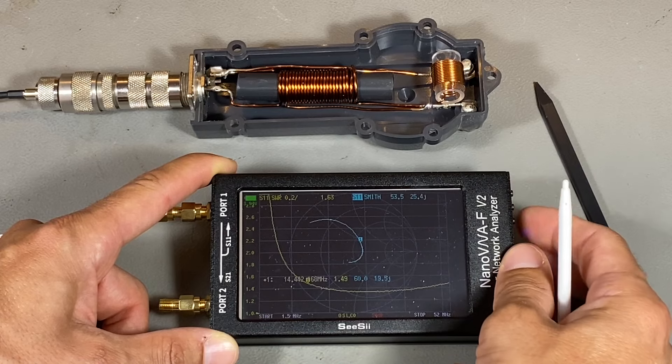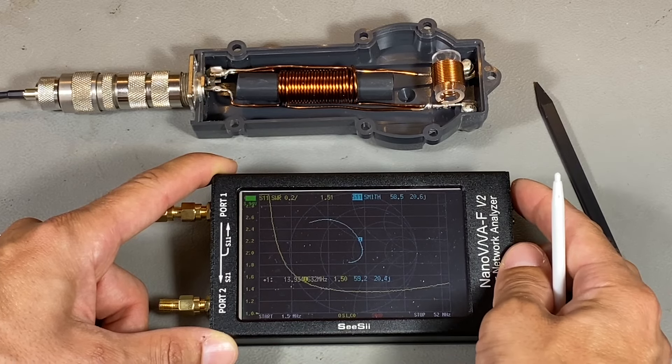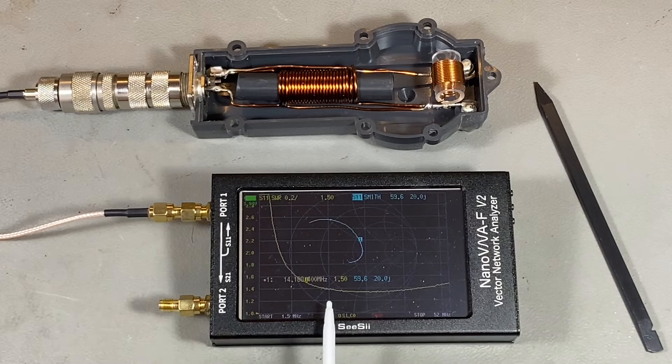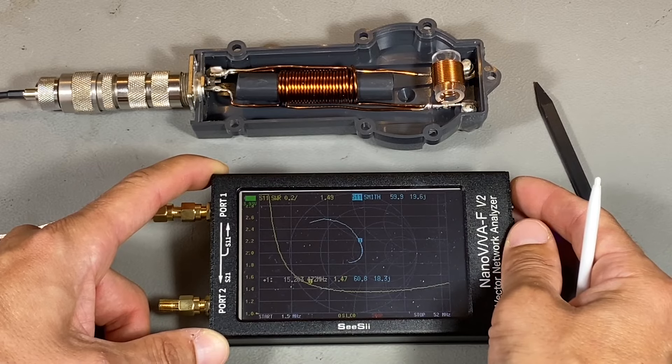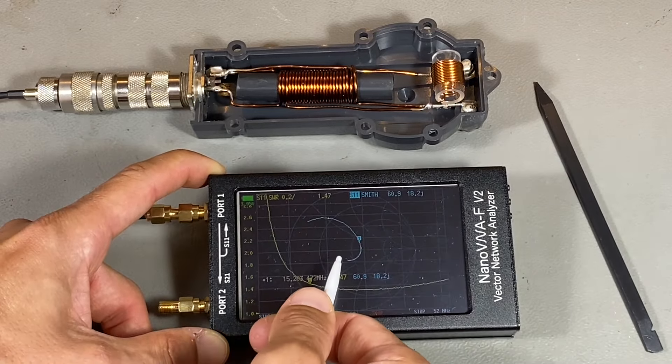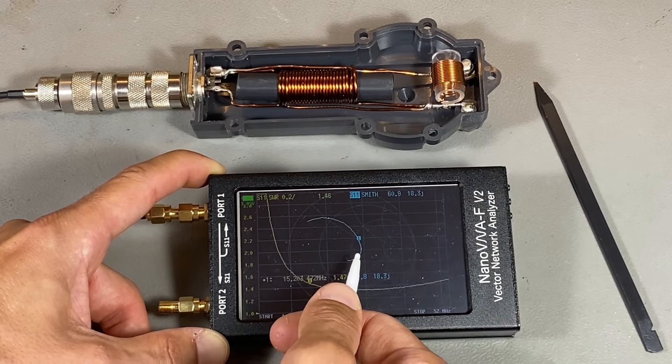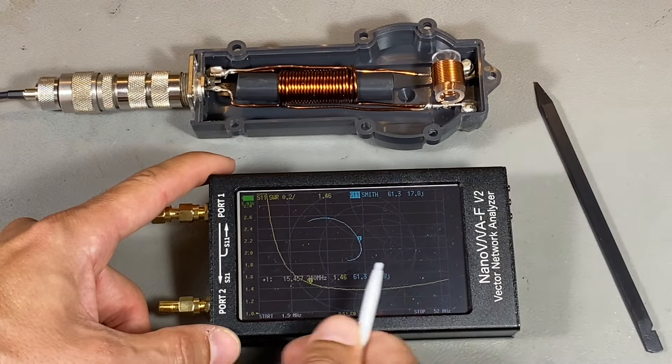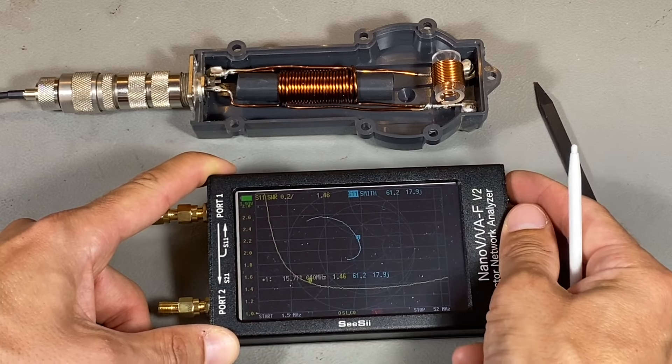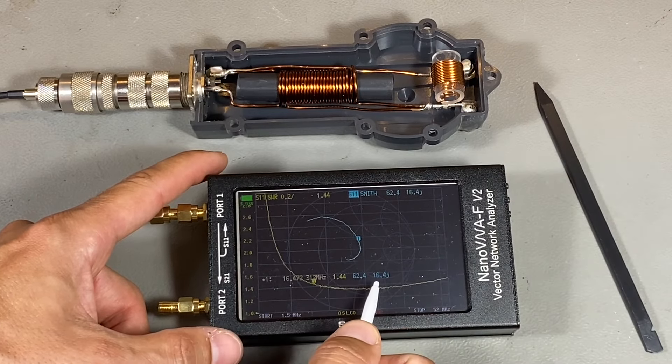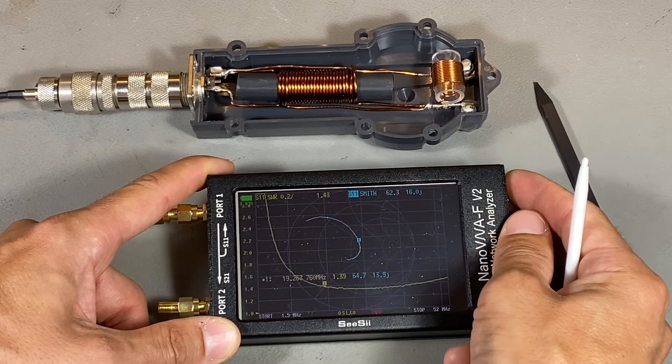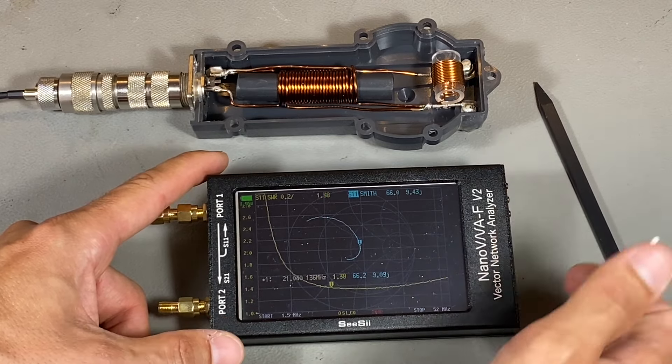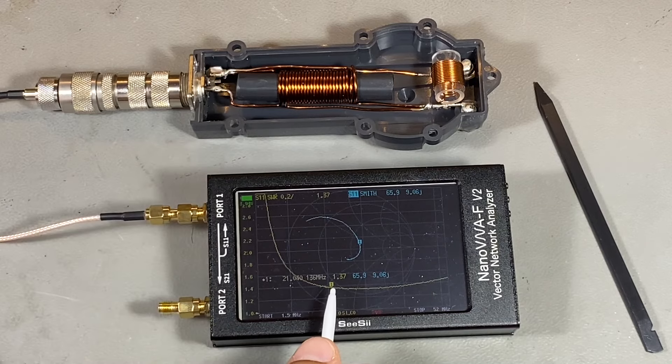The next band for the antenna is 20 meters, which is this one here. And we can see 1.5 SWR here. And we are going towards the real axis. The reactive part of the impedance is going down and down. And next band is 21 at 15 meters, 1.37.